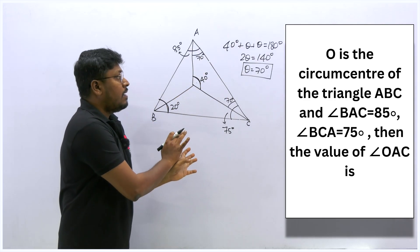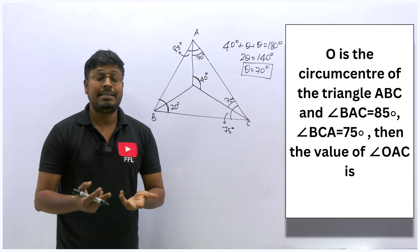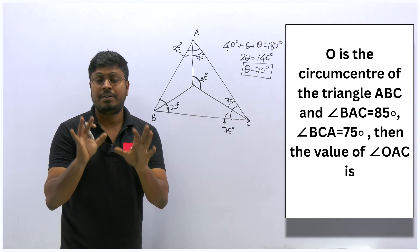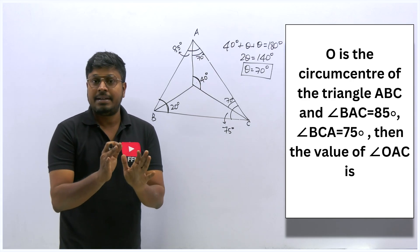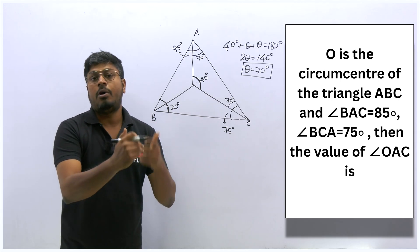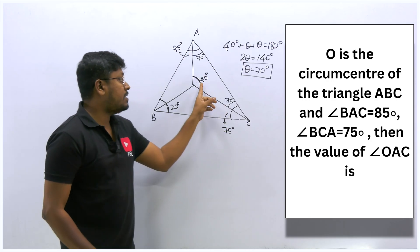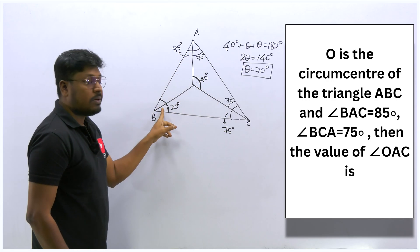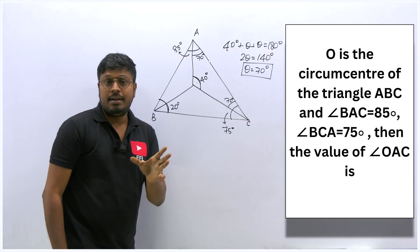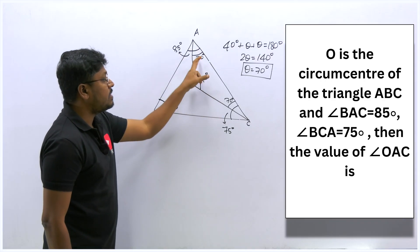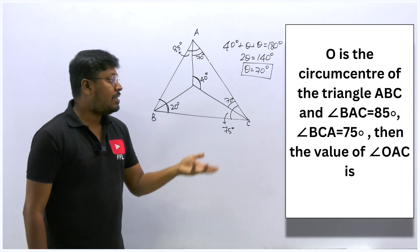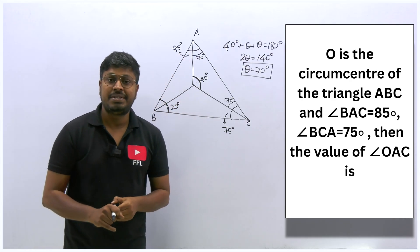No formula was used—just the basic concepts of circumcenter. The steps: find the missing angle using the angle sum property, double it to get the circumcenter angle, then use the isosceles triangle property (both base angles equal) with the 180° rule to find the target angle. The answer for Question 2 is 70°.